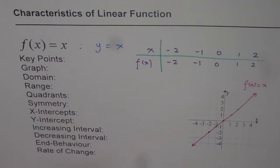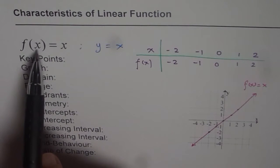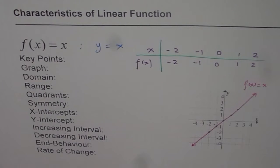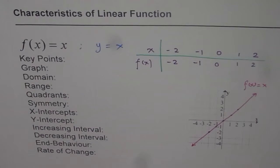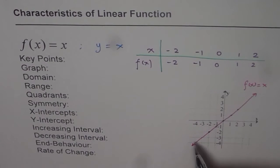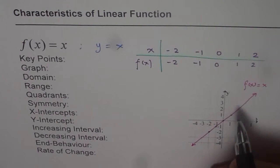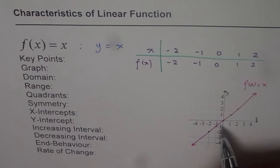I hope these two terms are absolutely clear. One is f of x, which is function notation. Second is key points — key points are important points which help us to draw the graph. For a linear function, minus 2, minus 1, 0, 1, and 2 are good points to take. Here we have a graph which is an absolutely straight line, and every point on this line is collinear.